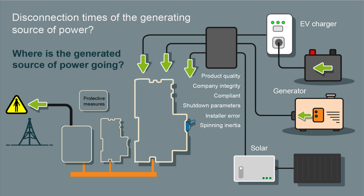Another important thing which needs good understanding from installers: where is this generated source of power going? Once it's on the bus bar, it can go out onto the grid, causing possible danger for people working on it.